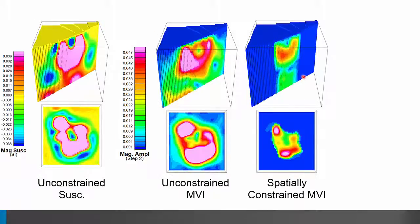This constraint is relatively simple and required only a general sense of the spatial extent of the kimberlite at the surface. The impact on the model, however, compared to the unconstrained result is significant.